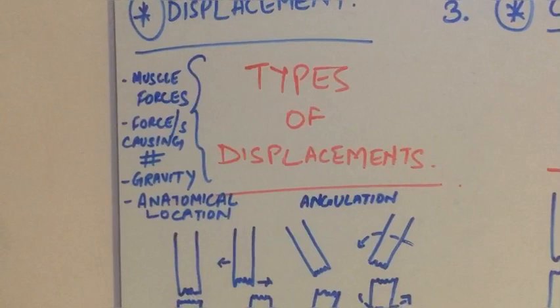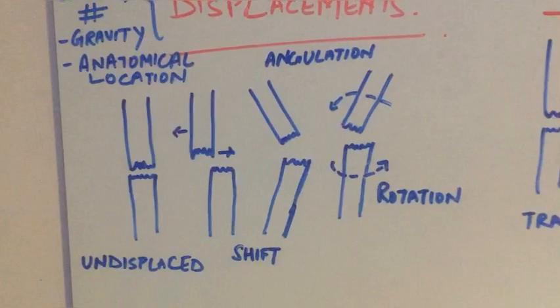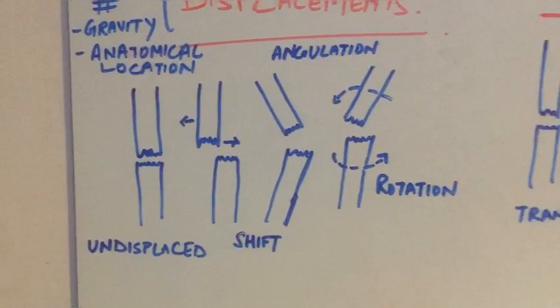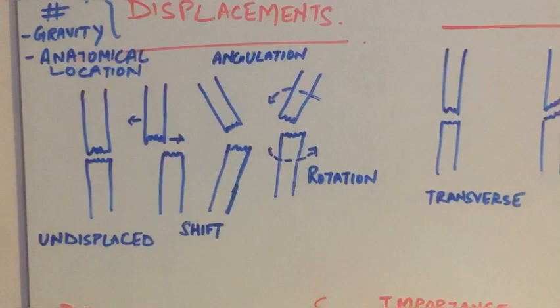Sometimes there can be undisplaced fractures wherein, although the muscle forces are acting on it, the stability of the fracture is such that the bone has been broken but there is no displacement. Then there are different types of displacement which you can see using an x-ray.